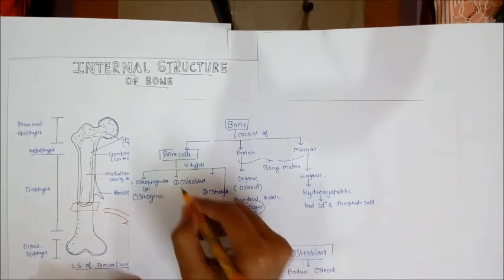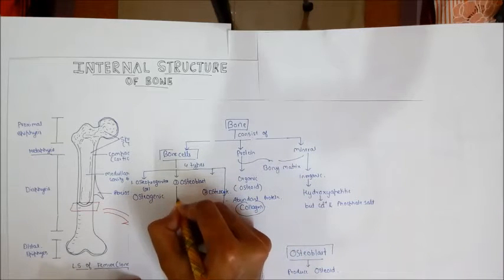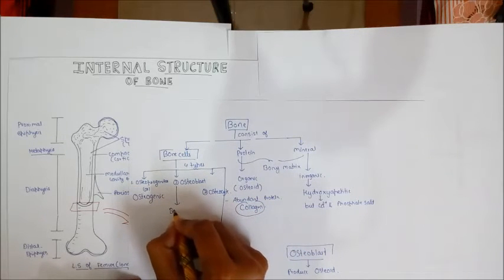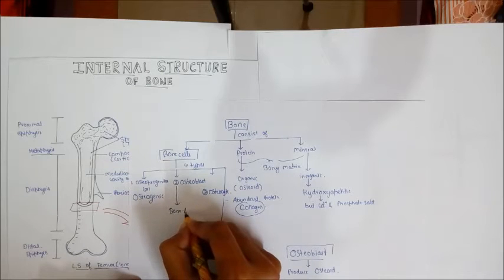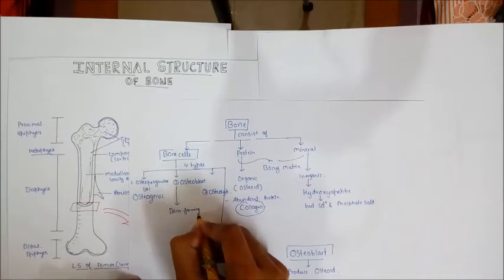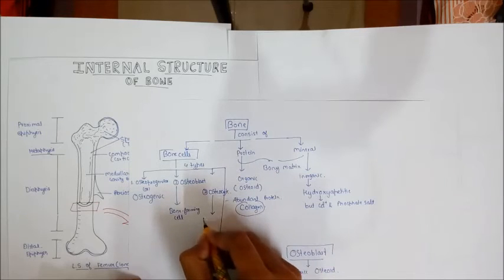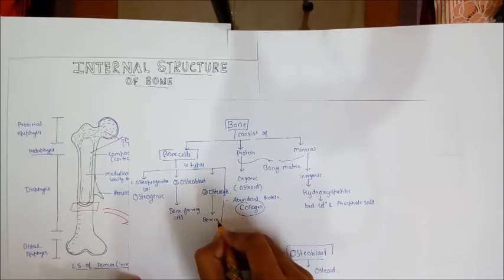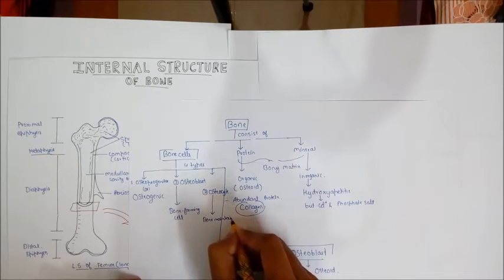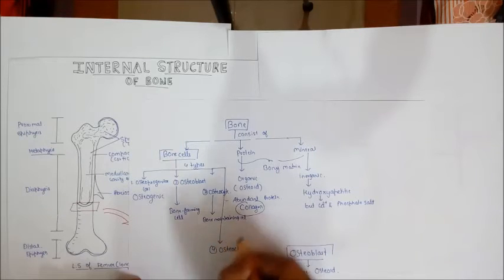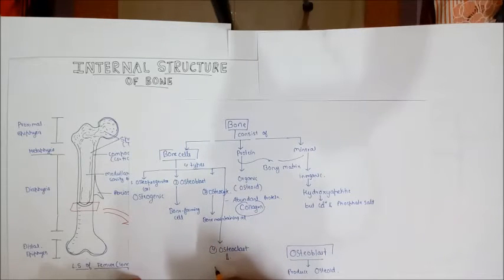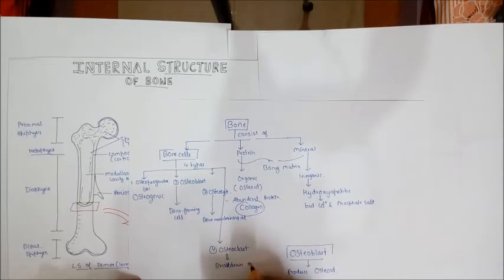Once osteoblasts become trapped in their matrix they are called osteocytes. Osteoblasts are the bone-forming cells, as they form the osteoid. Osteocytes are the bone-maintaining cells. Osteoclasts carry out the resorption or breakdown of the bone.